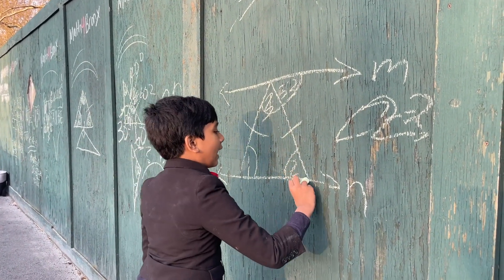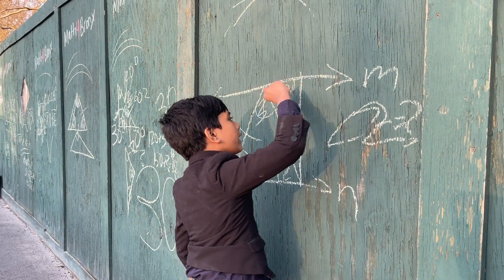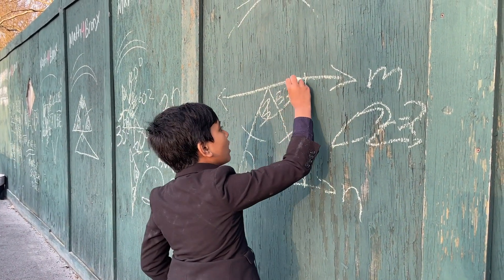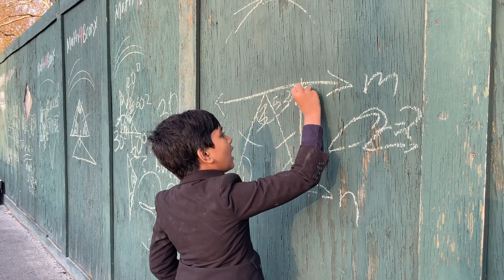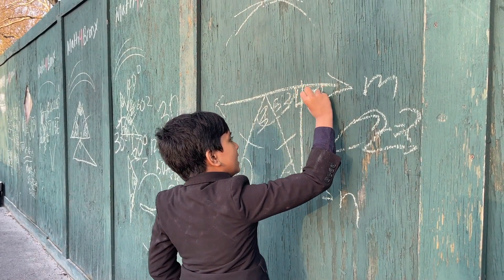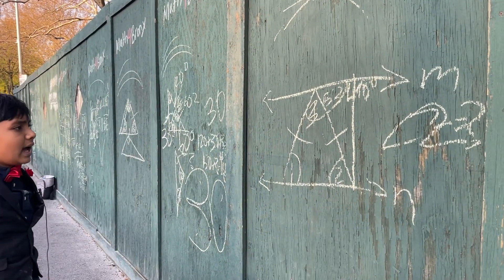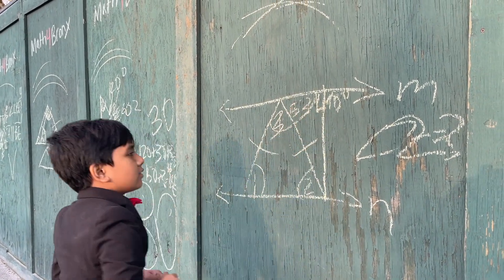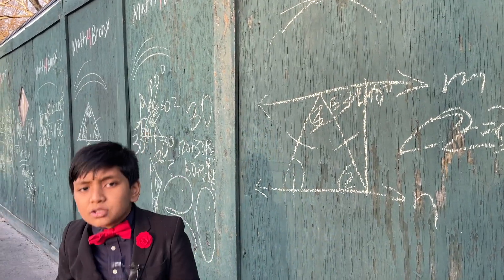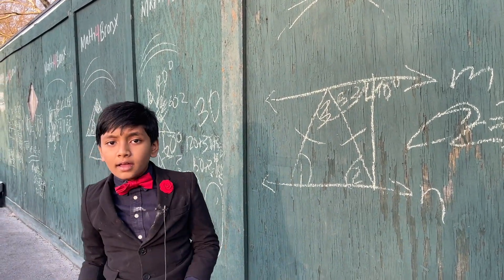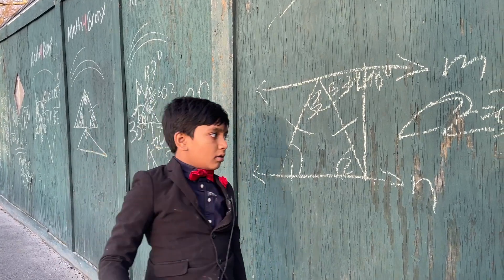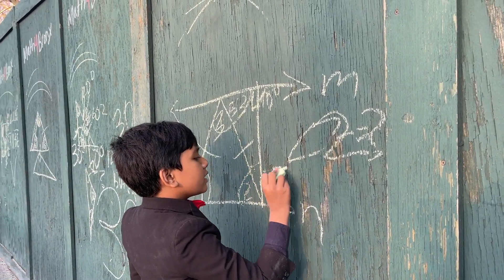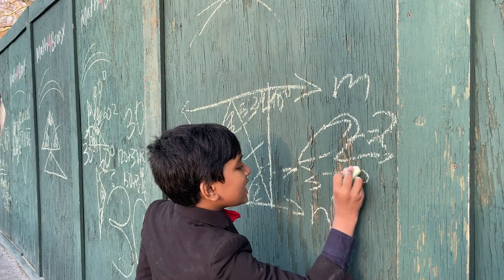We can actually solve this by drawing what I think is called an auxiliary line. So, this must be 90 degrees, as it's perpendicular to line M. This is 53 degrees, this is 90 degrees. 53 plus 90 plus what is 180? Well, if you didn't figure it out with the calculator, it's 37.